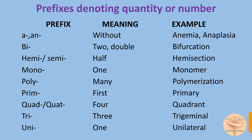Prefixes denoting quantity and number. For example, the prefix 'a' or 'an' means without. An example is anemia — anemia refers to blood, and anemia means absence of blood or loss of blood. The prefix 'bi' means two or double. The prefix 'hemi' or 'semi' means half — hemisection, hemisphere, semicircle.